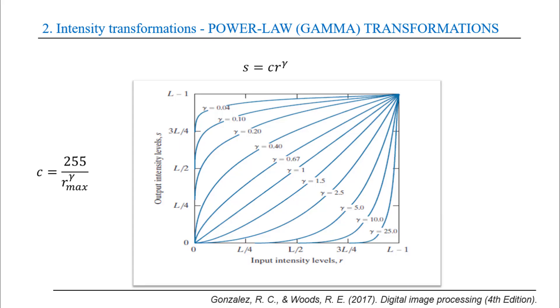The last transformation is power law transformation or gamma transformation. The general form is s equals c times r to the gamma. As we can see from the figure, different values of gamma give us different curves. In the same way as log, we can calculate c. Let's implement it on Visual Studio.